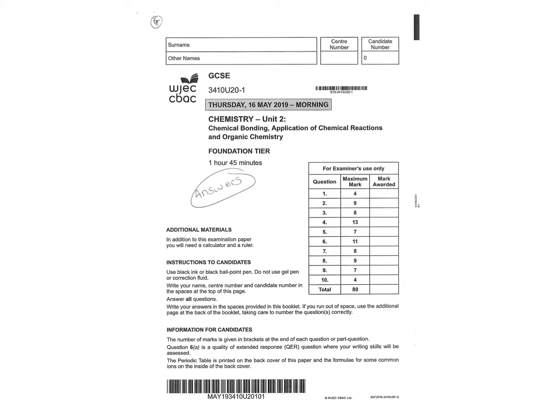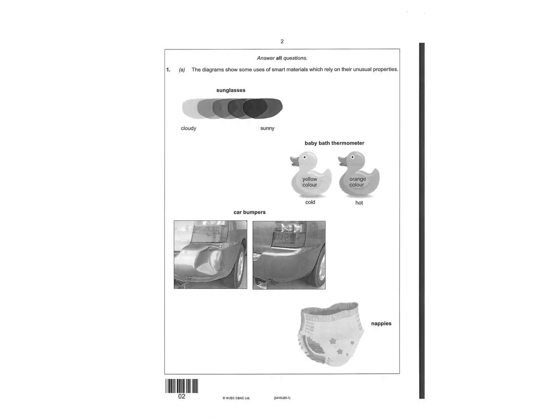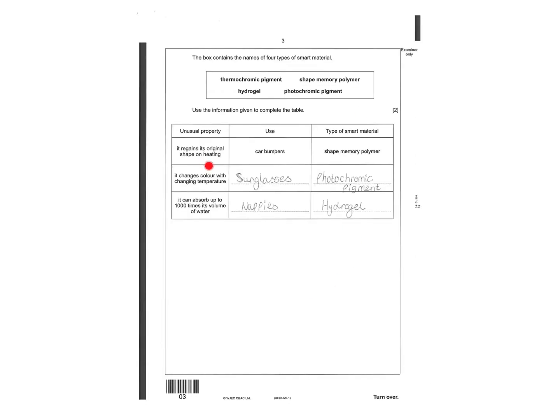This is the 2019 triple foundation tier chemistry paper. The first question gives you four different images of different smart materials and shows their unusual properties. You're asked to fill out a table. When something changes color with the temperature, that could be something like a thermometer and that's thermochromic pigment.